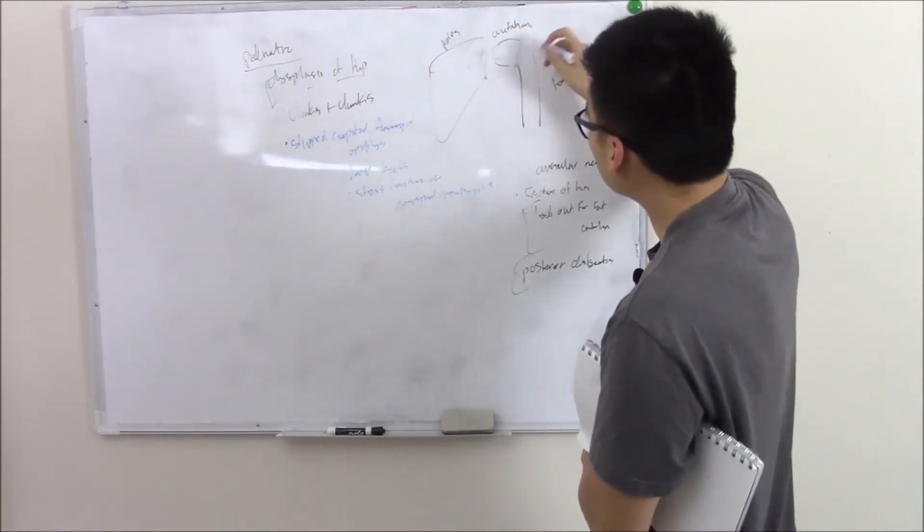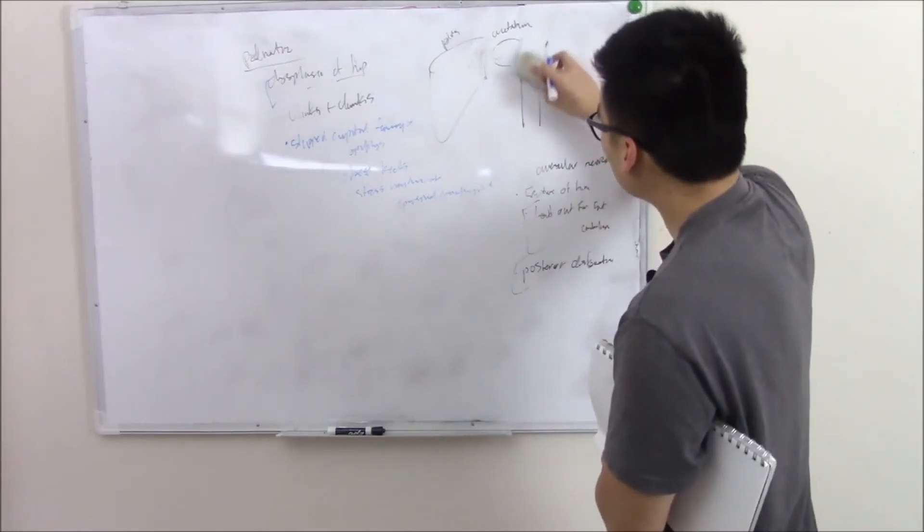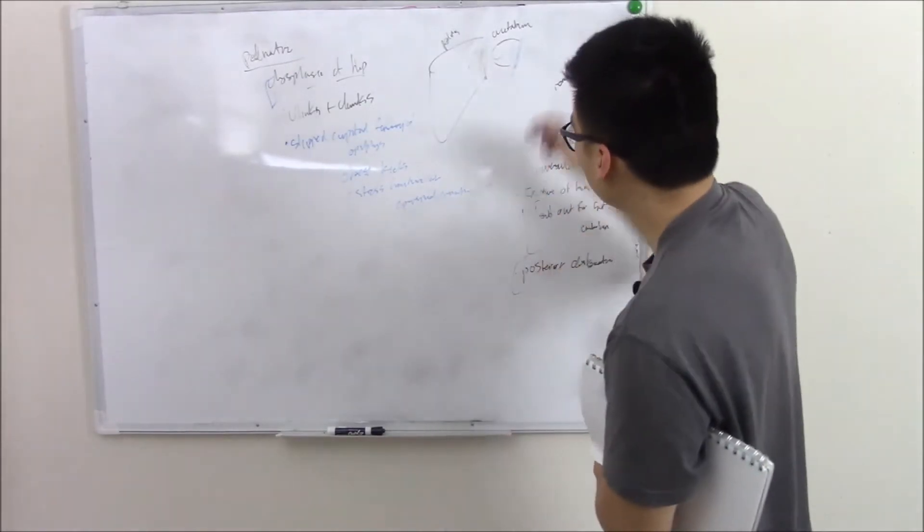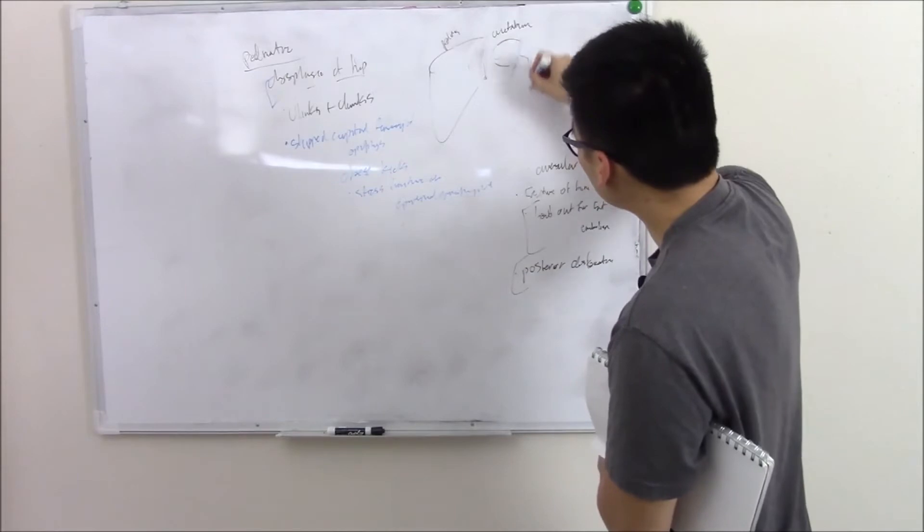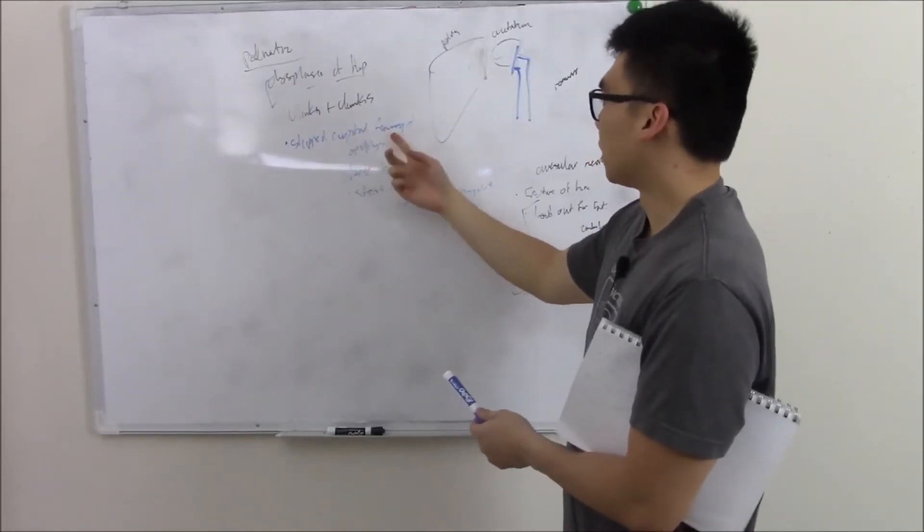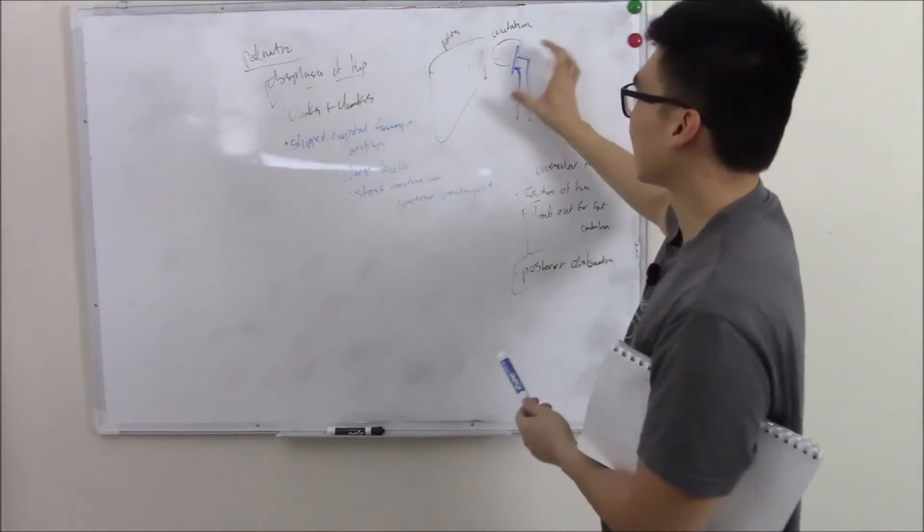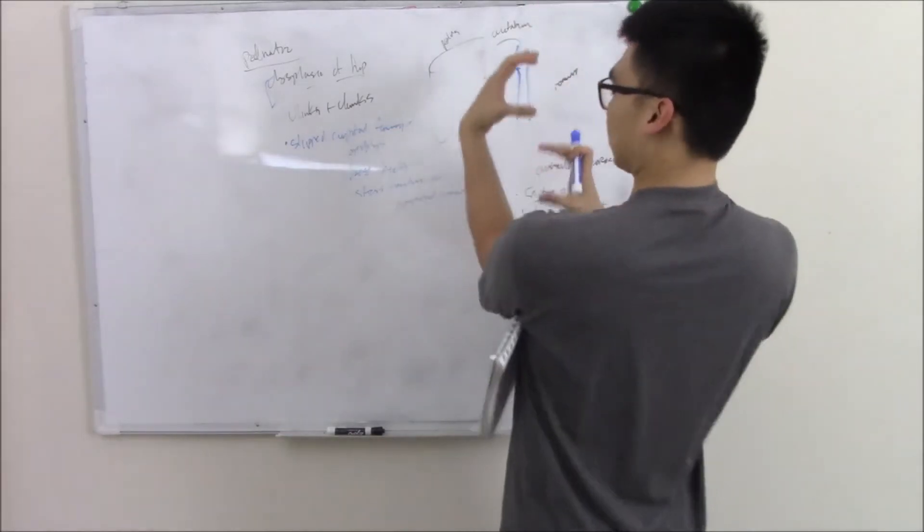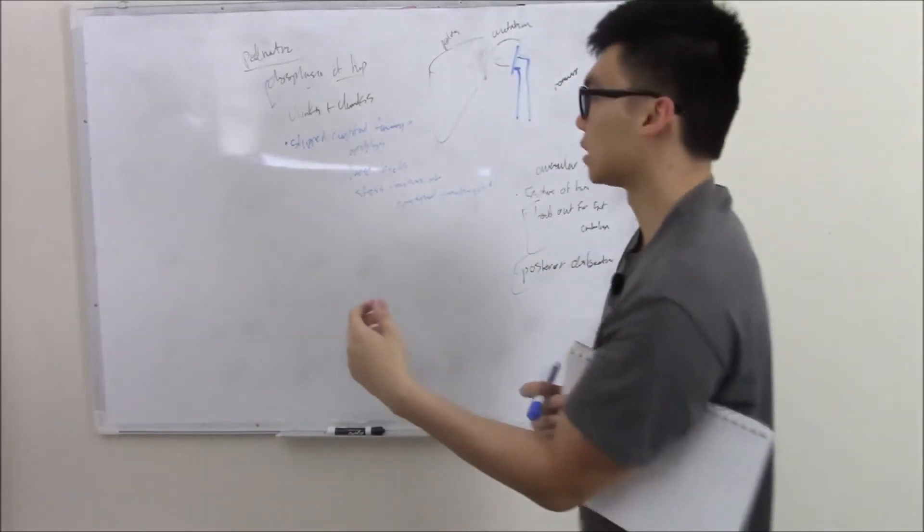If you put too much stress on it, you can have a stress fracture, and your metaphysis can kind of come apart at the seams and move away from it. We call that slipped capital femoral epiphysis. It's kind of like the epiphysis and metaphysis have slipped apart, usually in overweight kids. Moving on.